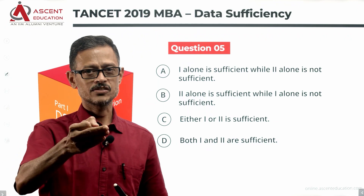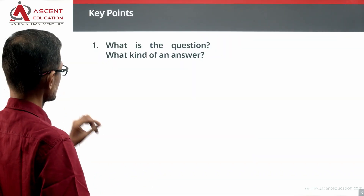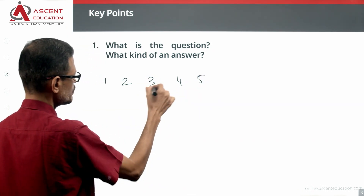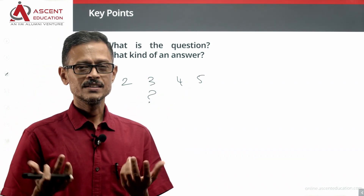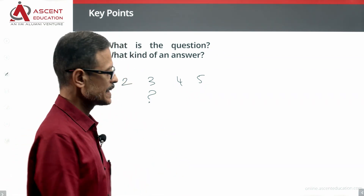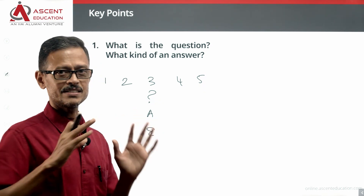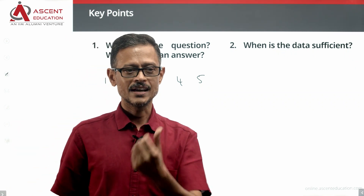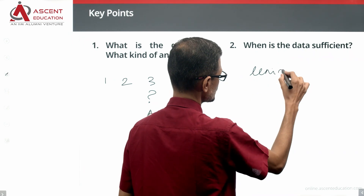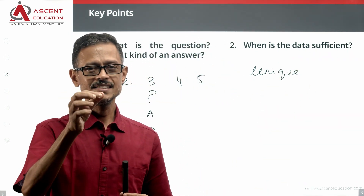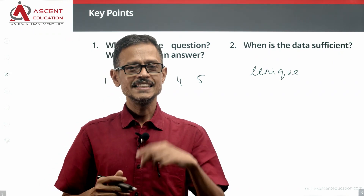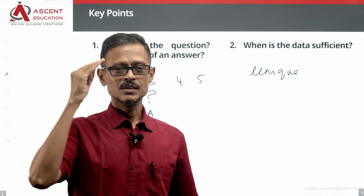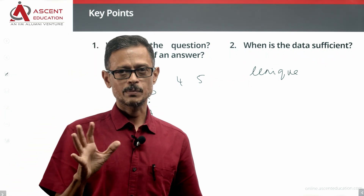Let's evaluate each statement one at a time. The key question is: who is in the middle place? Among A, B, C, D, E arranged in ascending order, who is in the third position? The data is sufficient only when we arrive at a unique answer — one definitive person in the middle.